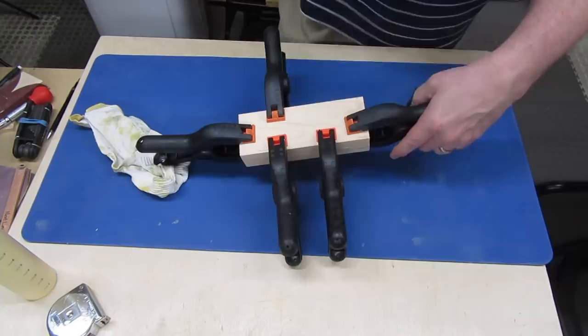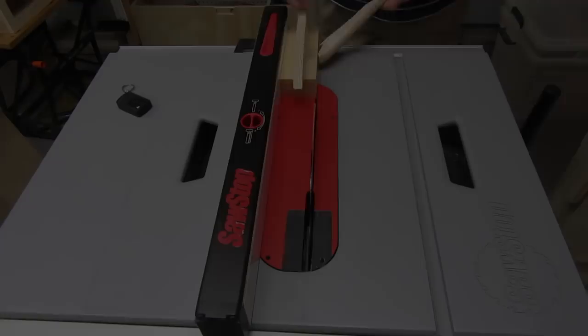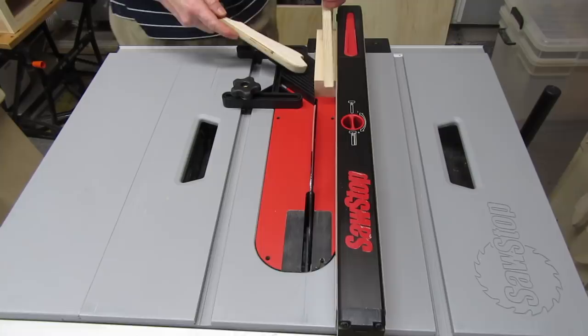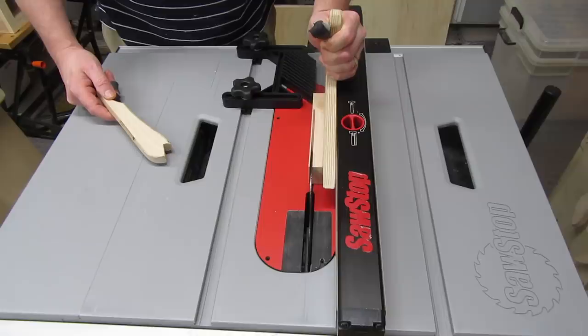Once the glue dried, I cleaned up the edges, and then I wanted to cut a thin strip to use for the heel and blade slot. The blade's about 5 64ths of an inch thick, so I cut the strip to about a 16th of an inch. I recommend using a feather board when cutting something this thin.